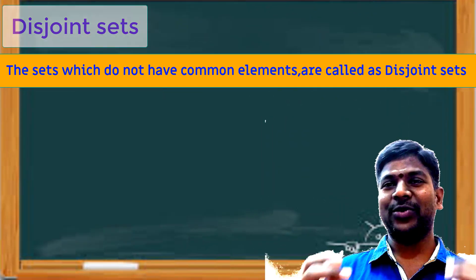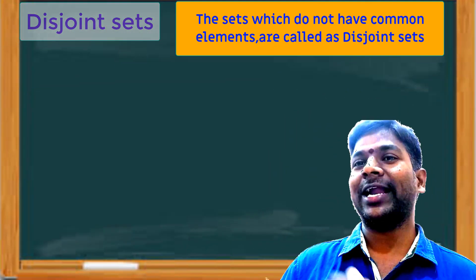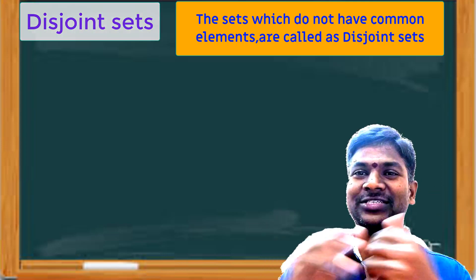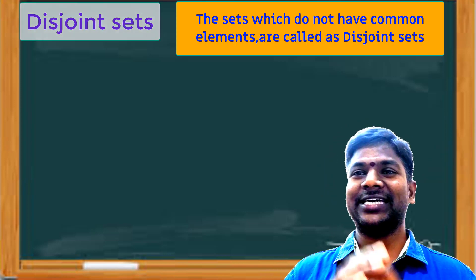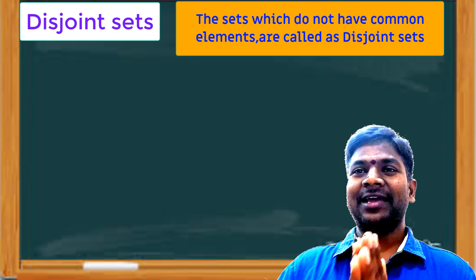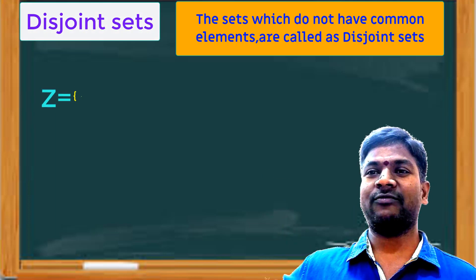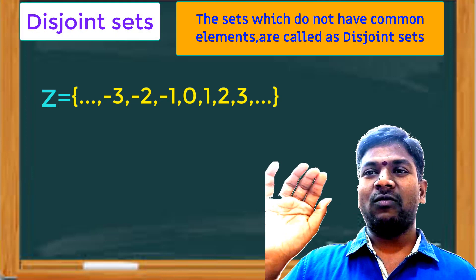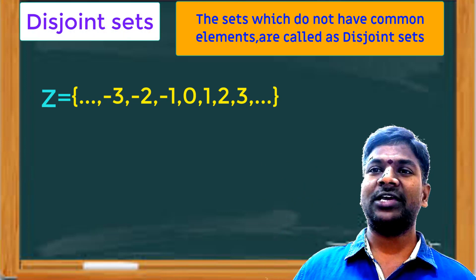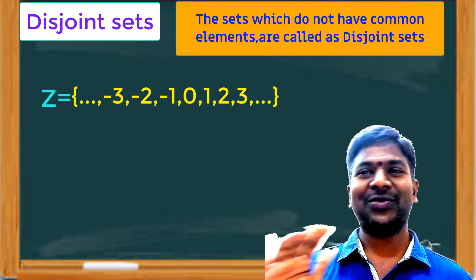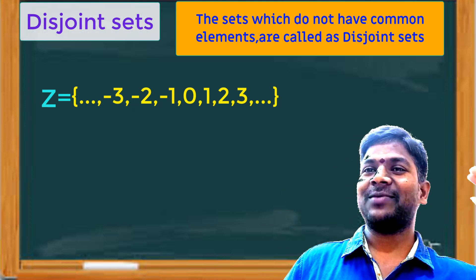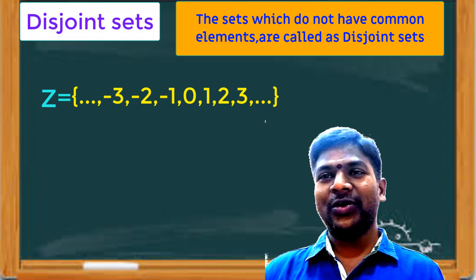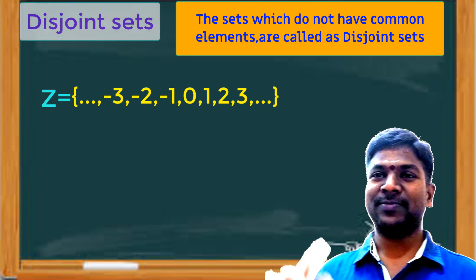Let us take one more example for better understanding of disjoint sets. Do you know integers? Integers are denoted by Z, and the elements are: 0, 1, 2, 3, 4, ... and −1, −2, −3, −4, ... Here 1, 2, 3, 4, ... are positive integers, 0 is neither positive nor negative, and −1, −2, −3, −4, ... are negative integers. Let us denote the set of negative integers by capital N.